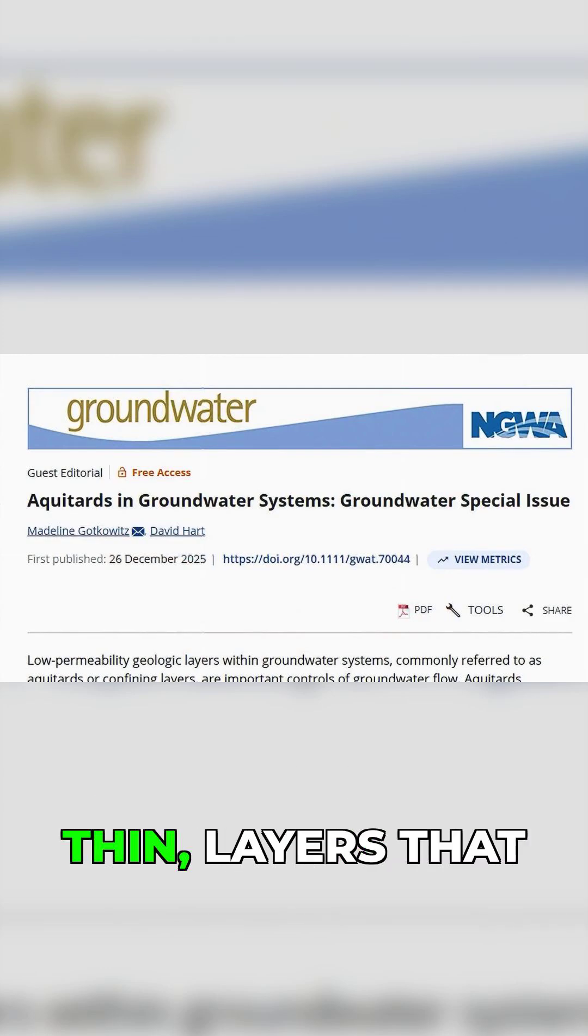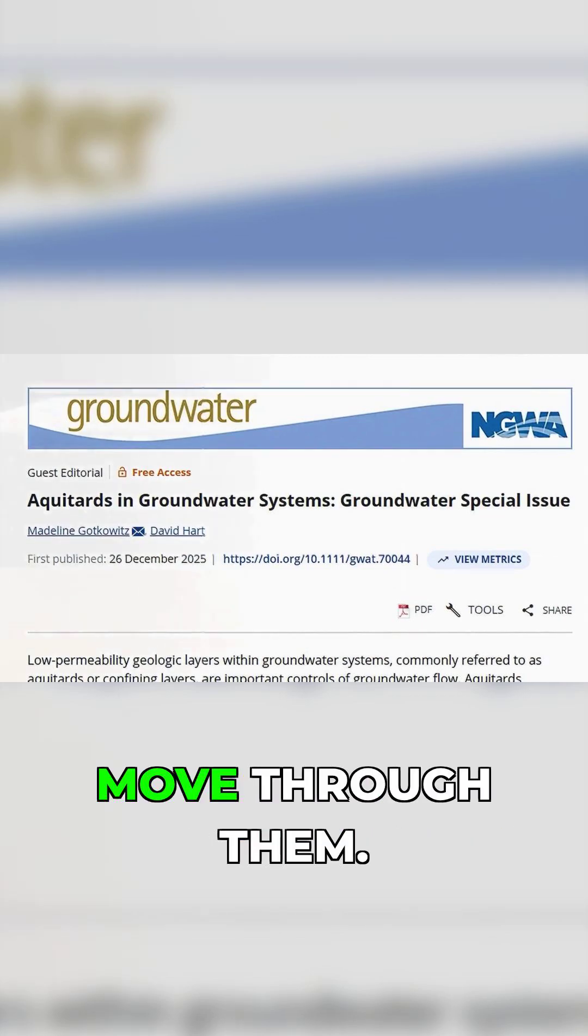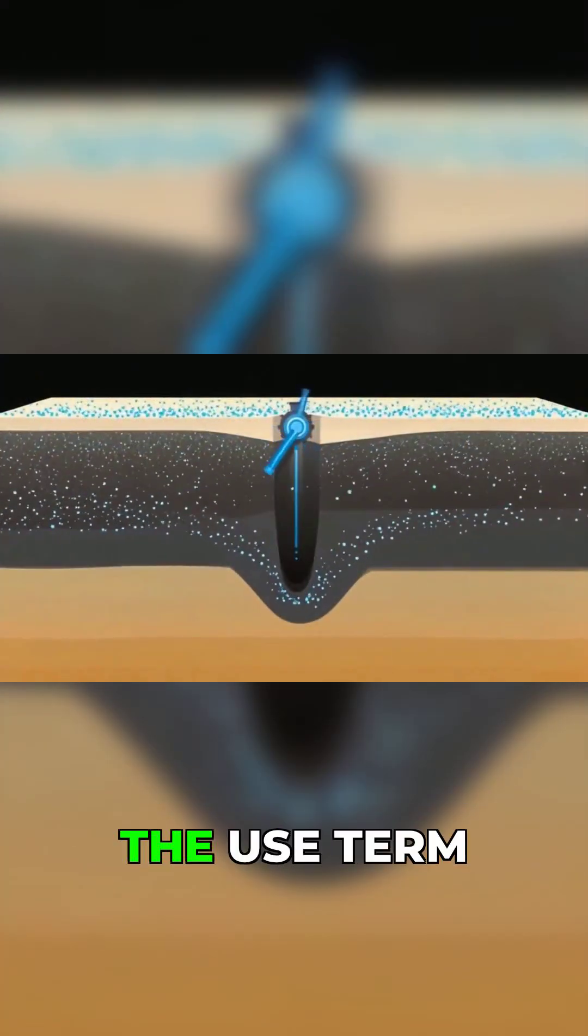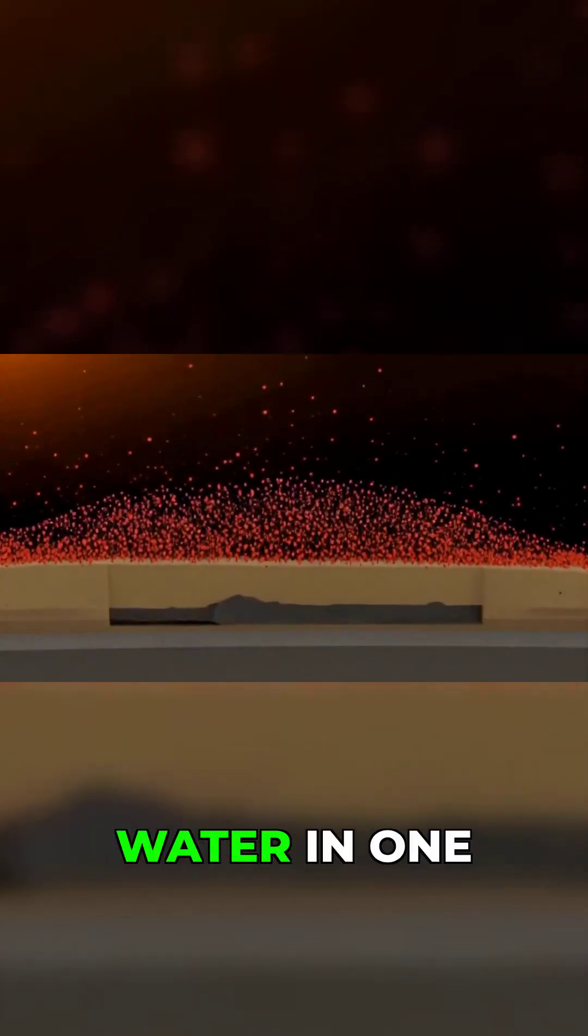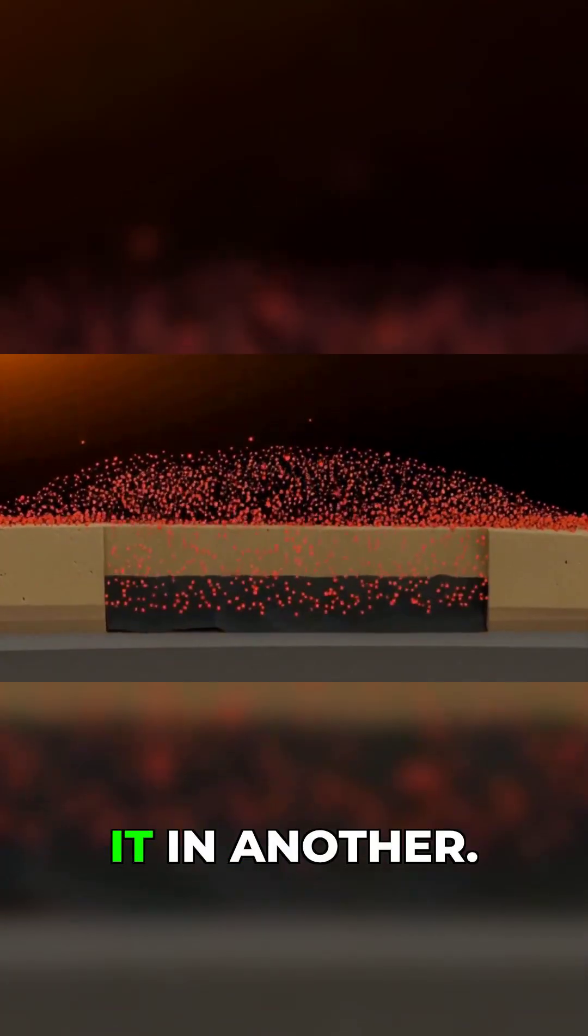Many contain cracks or thin, sandy layers that allow some water and contamination to move through them. Some scientists even use the term aquitardifer to describe formations that block water in one direction but transmit it in another.